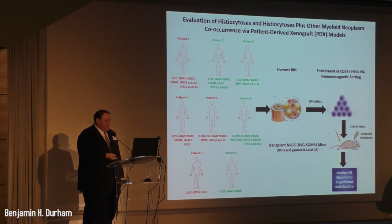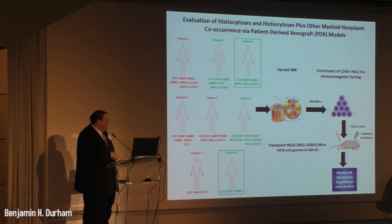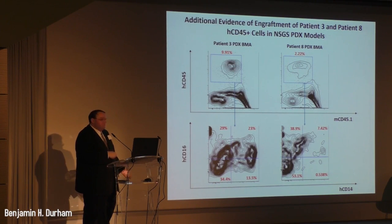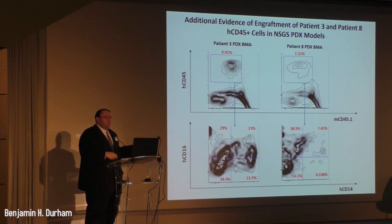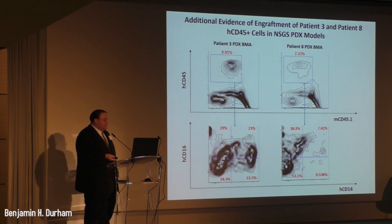We have also had engraftment in xenografts from Patient 3 and Patient 8. Patient 8 has ECD driven by BRAF V600E with no other myeloid neoplasm, and Patient 3 has ECD and myeloproliferative neoplasm overlap. These xenograft models are still alive and showing reasonable but modest engraftment in bone marrow, with populations positive for human CD16 and human CD14 — indicating both a monocyte component and a myeloproliferative component engrafting. We are continuing to monitor these mice and will do a detailed evaluation when they become moribund.